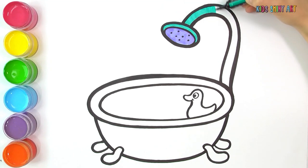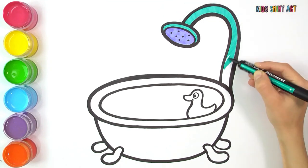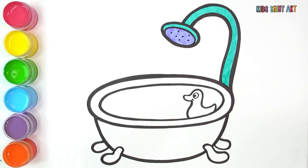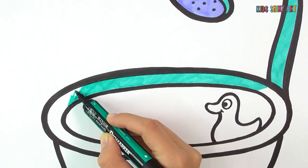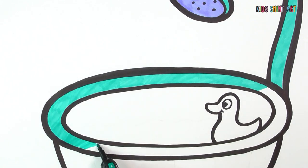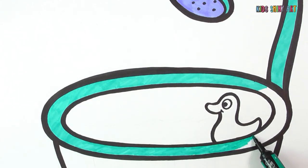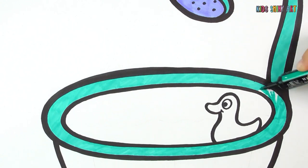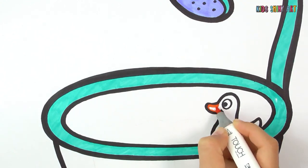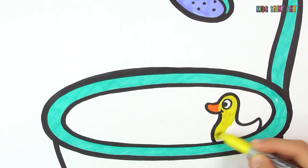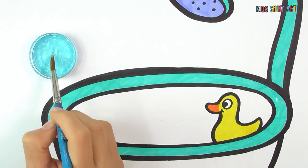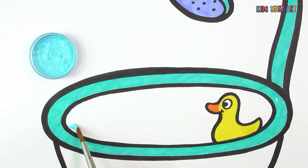Some more green. And orange for the duck's beak and yellow for the body. Azure for the water in the tub.